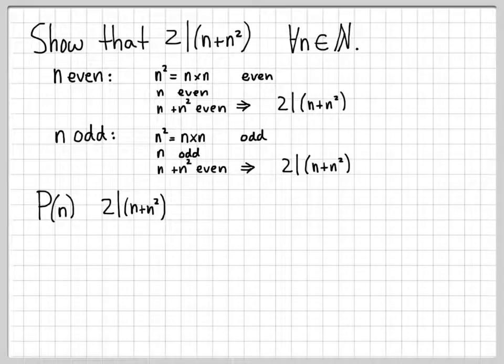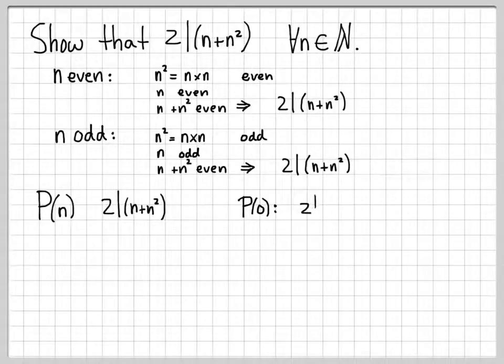When we do a mathematical induction proof, we always start by establishing that the statement is true for the case of n equals zero. So what is the statement P of zero? That is the statement: does two divide zero plus zero squared, or does two divide zero? And the answer is yes — two goes into zero zero times, with no remainder. So this is a trivial thing to check to make sure that P of zero is true.